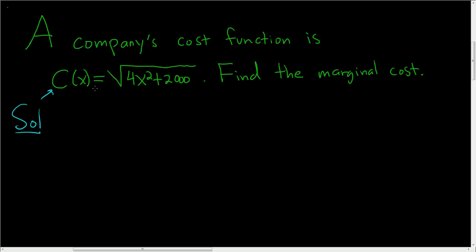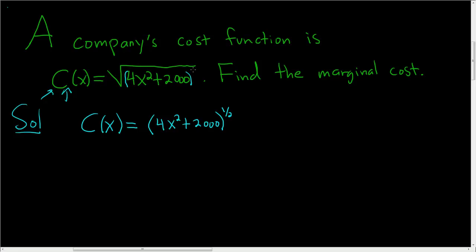All we have to do is take the derivative of c of x. Before we do that, it's useful to rewrite it as follows. This is equal to parentheses 4x squared plus 2,000, and this is all being raised to the 1 half. There's really a 1 here and a 2 here, so it's 1 over 2.